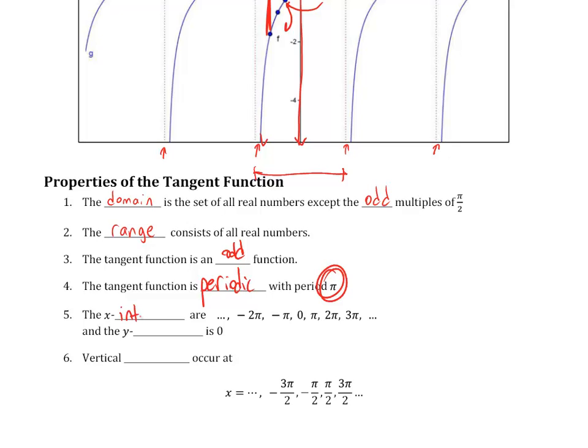The x-intercepts, you can see from the graph, are negative 2π, negative π, 0, π, 2π, 3π, and so on in each direction. And the y-intercept is at the origin.